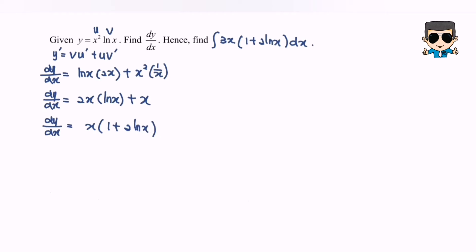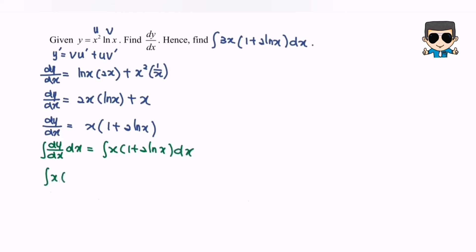Now if we integrate both sides with respect to x, the integral of dy/dx equals the integral of x bracket 1 plus 2 ln x dx. We obtain y plus c, where y equals x squared ln x. So the integral of x(1 plus 2 ln x) dx equals x squared ln x plus c.